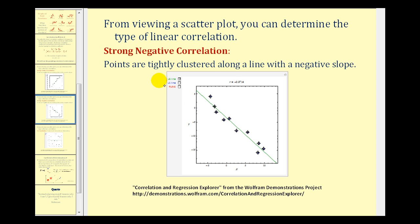Here's an example of a strong negative correlation. Notice the points are tightly clustered along a line with a negative slope, which means that r would be close to the value of negative one.